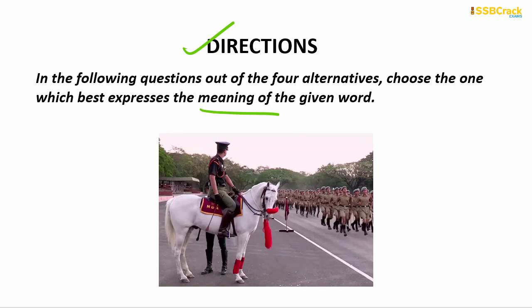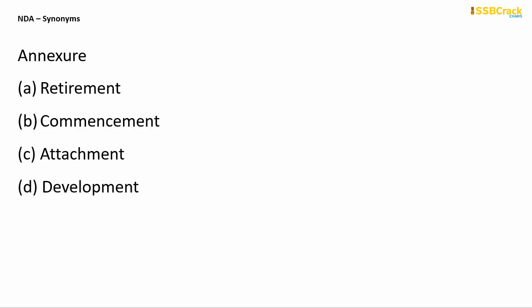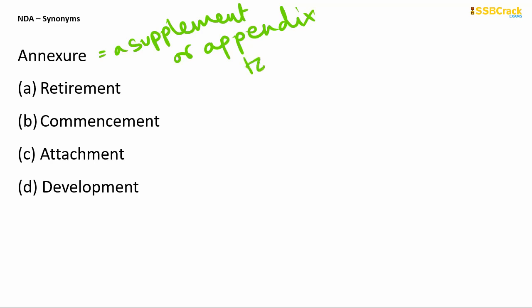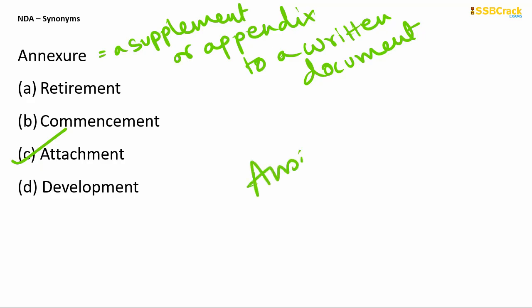Let's start with the first word: annexer. Annexer means a supplement or an appendix to any kind of written document. It is basically an extra attachment — it gives extra information about what is written in the document. So annexer is essentially an attachment. Therefore, 'attachment' is the synonym of annexer, and your answer is option C.